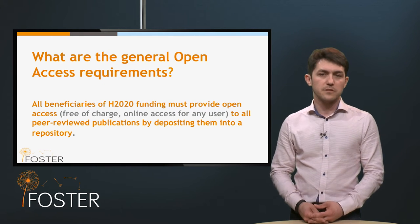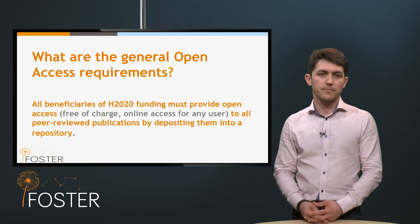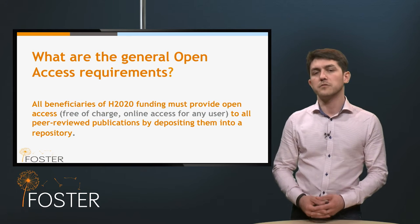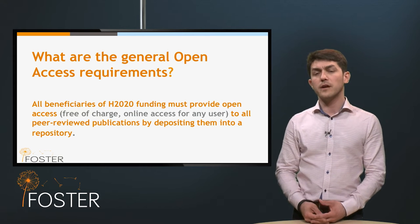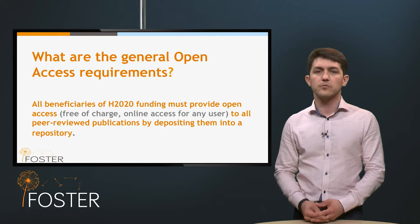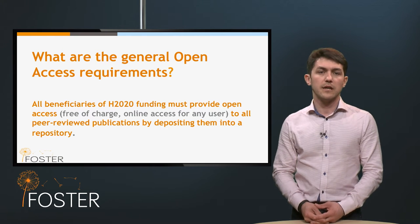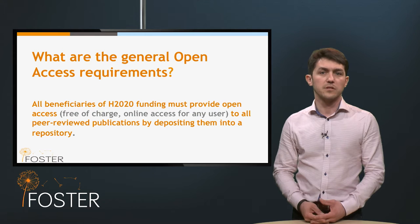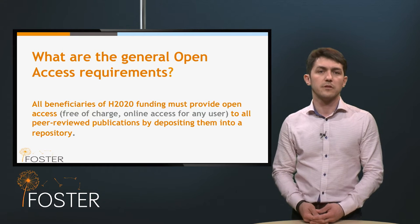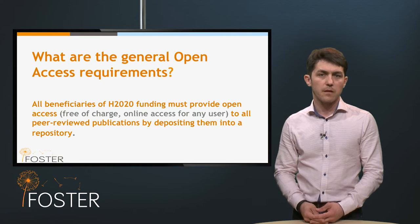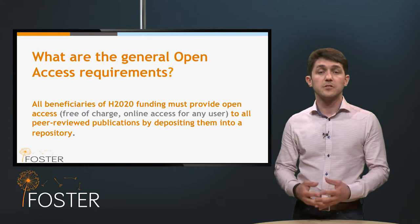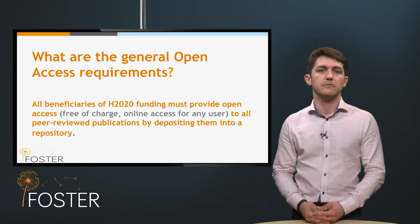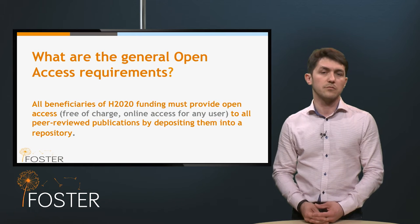What are the general requirements for participants in Horizon 2020? Each beneficiary must ensure open access — which is free of charge online access for any user — to all peer-reviewed scientific publications relating to the results of the project, by depositing them in a repository for scientific publications. Moreover, the beneficiary must aim to deposit at the same time the research data needed to validate the results presented in those scientific publications, and ideally do so in a data repository.